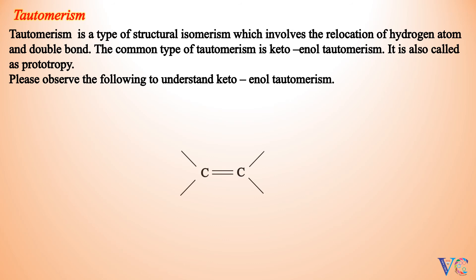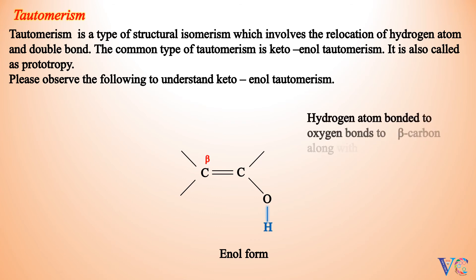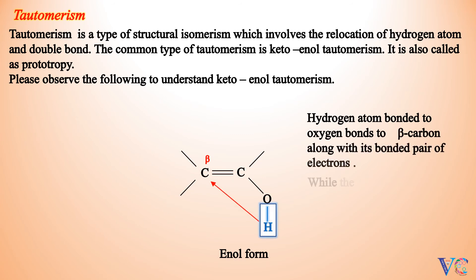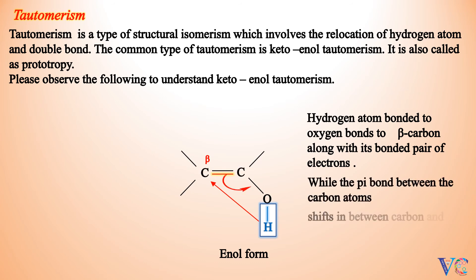In the enol form of a compound, the hydrogen atom bonded to oxygen bonds to the beta-carbon along with its bonded pair of electrons, while the pi bond between the carbon atoms shifts in between carbon and oxygen. As a result, the keto form is obtained.